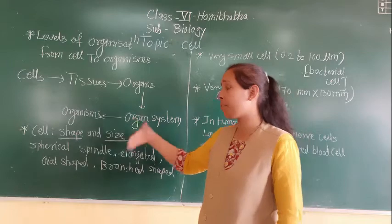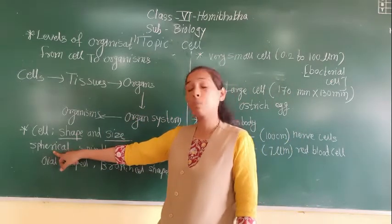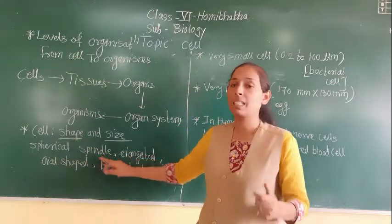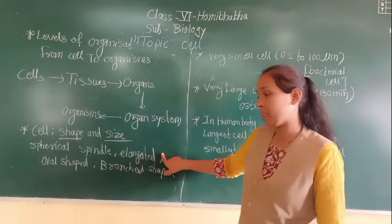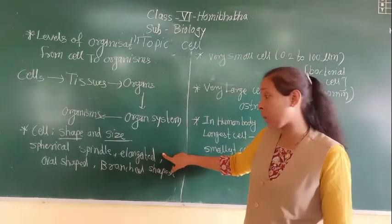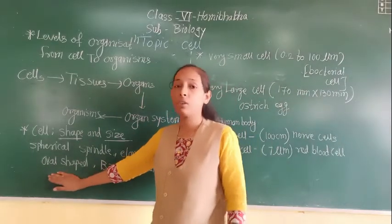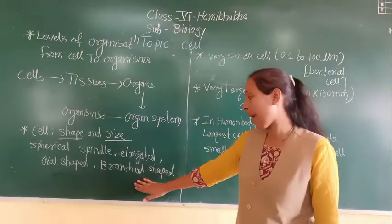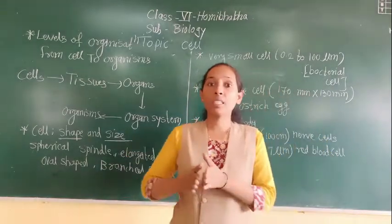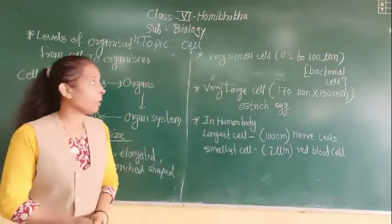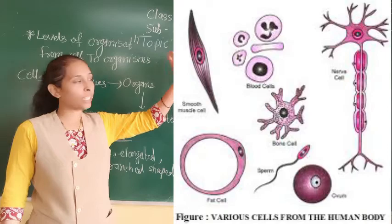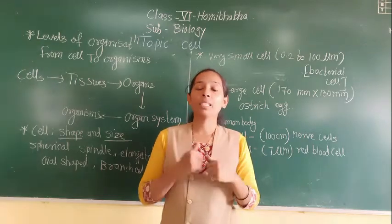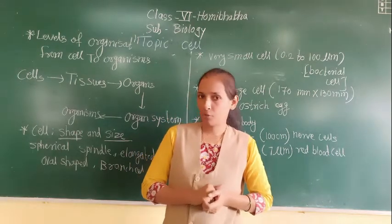There are different shapes of cells: spherical shape, spindle shape (muscle cells are spindle-shaped), elongated shape (nerve cells are elongated), oval shape (red blood cells in our body are oval-shaped), and branched shape. In images you can see these different cell shapes. Different cells are present in our body and their shape varies according to the functions they are performing.